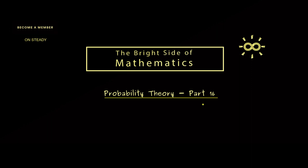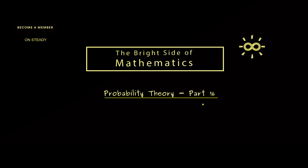In today's part 16 we will talk about the variance of a random variable. Please recall we already know that the expectation is the number the random variable X fluctuates around. The next question is: can we measure how much it fluctuates? Here in the picture we have a continuous case with a probability density function, and the variance should measure how wide this PDF is — roughly speaking, this gives us the variance V.